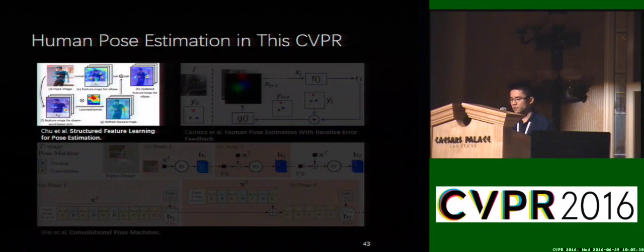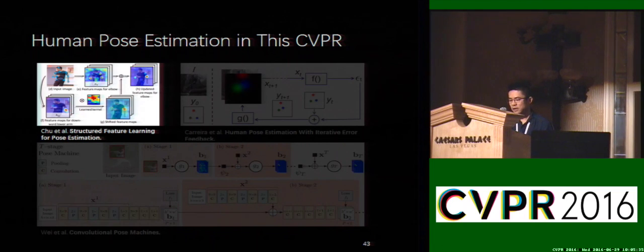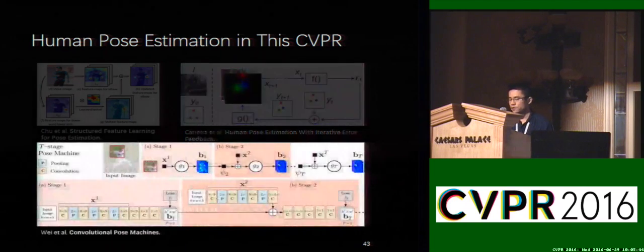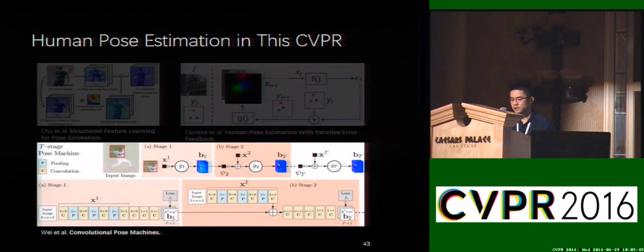There are also some interesting works which consider structure when training the network, such as Structured Feature Learning for Pose Estimation, Correcting Human Pose Estimation with Iterative Error Feedback, and Stacked Convolutional Pose Machine.